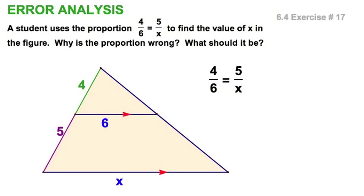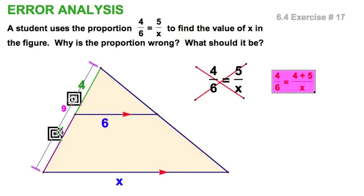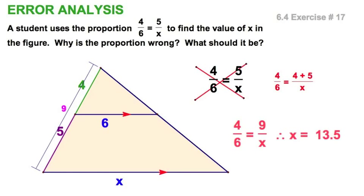All right. Another error analysis. This is just plain wrong. What is wrong with it? Well, look at the picture right here. This triangle is similar to this triangle, not the trapezoid. So, the 4 is to the 6 as the whole side, the 9, is to the x. That's what's wrong. So, you could solve that. You'll come up with 13 and a half.